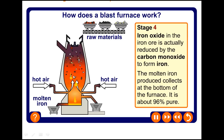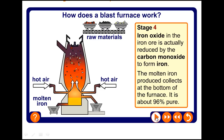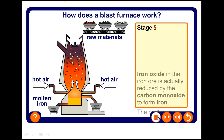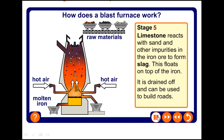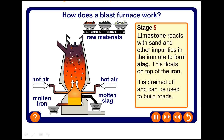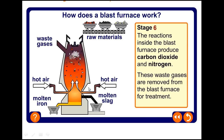In the upper zone, iron oxide is reduced to iron by carbon monoxide. The molten iron is collected at the bottom. The slag is collected over the iron and is collected through one outlet, while molten iron is collected through another outlet. The carbon dioxide gas goes out through the chimney.